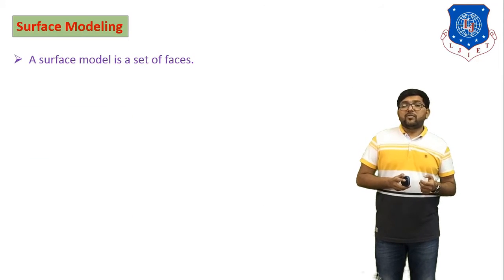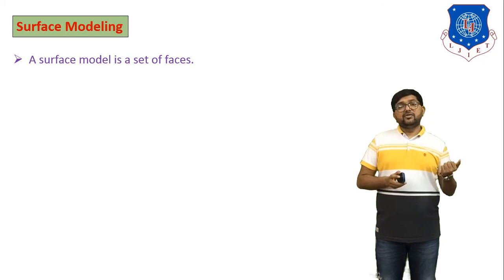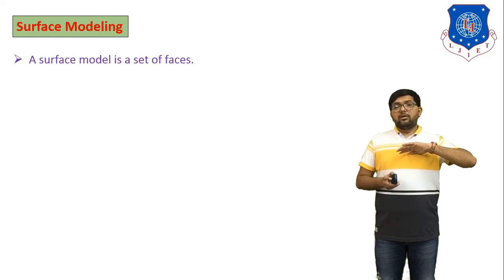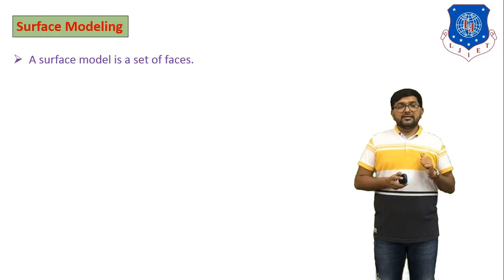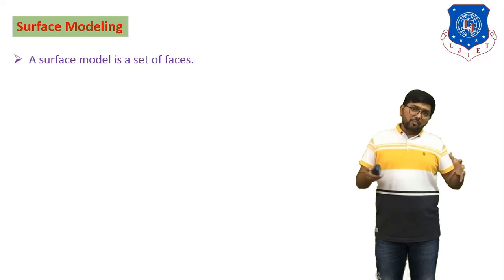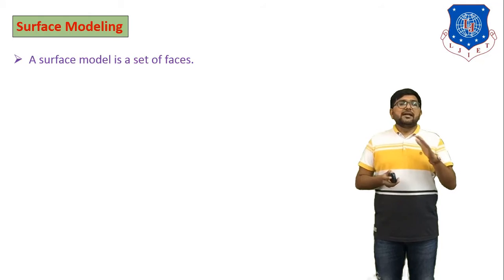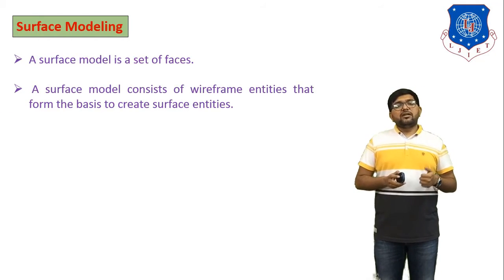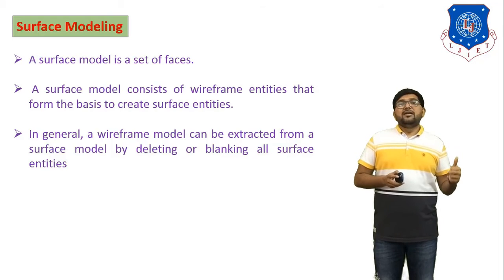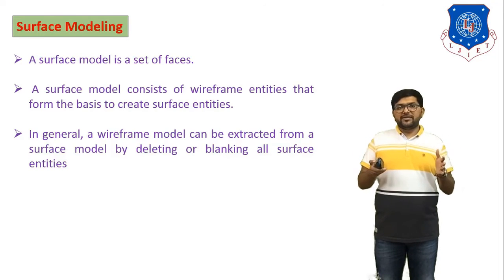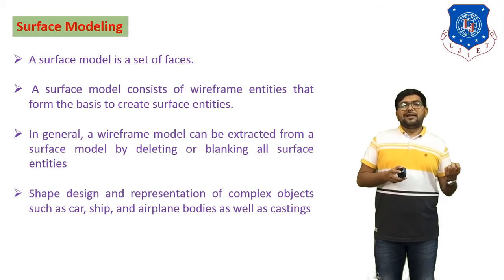Next is surface modeling. Surface modeling is useful when we have to draw something like a roof of a car or generate a surface. A surface model is a set of faces — we bound a number of faces to generate one solid part. A surface model consists of wireframe entities that form the basis for creating surface entities. A wireframe model can be extended from a surface model by deleting or blanking all the surface entities.